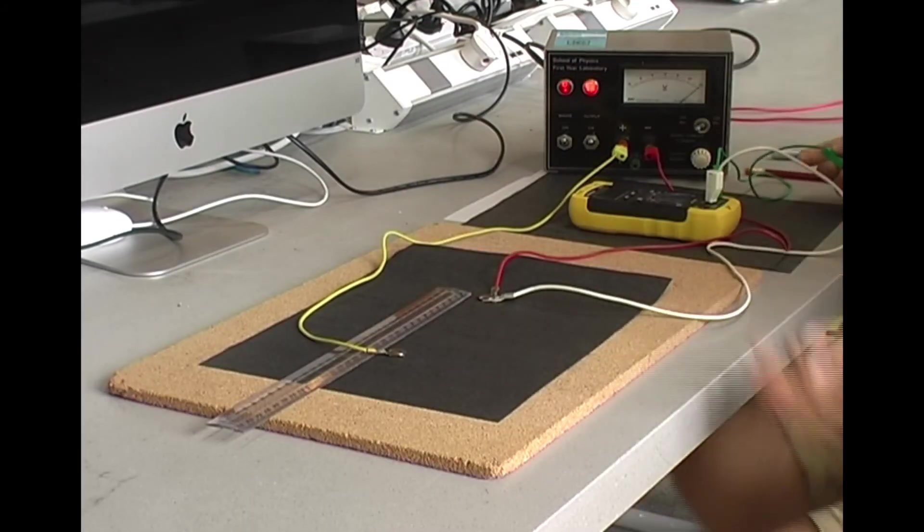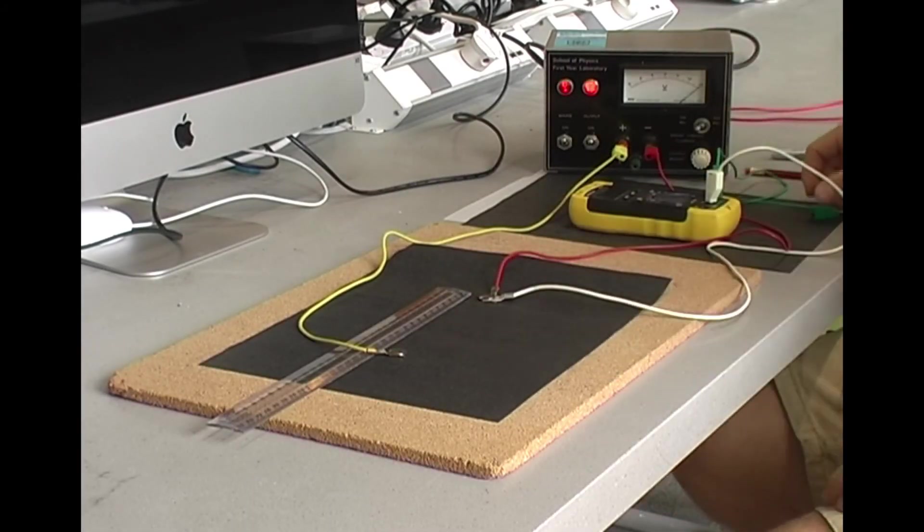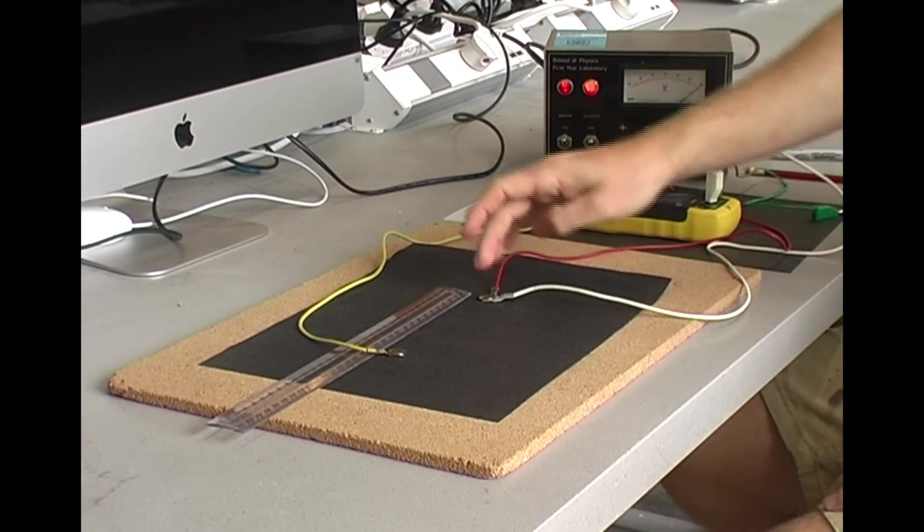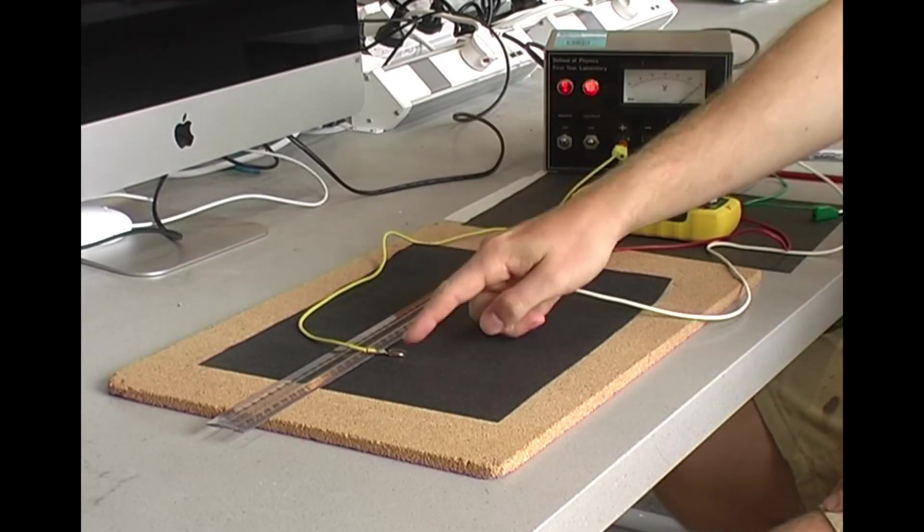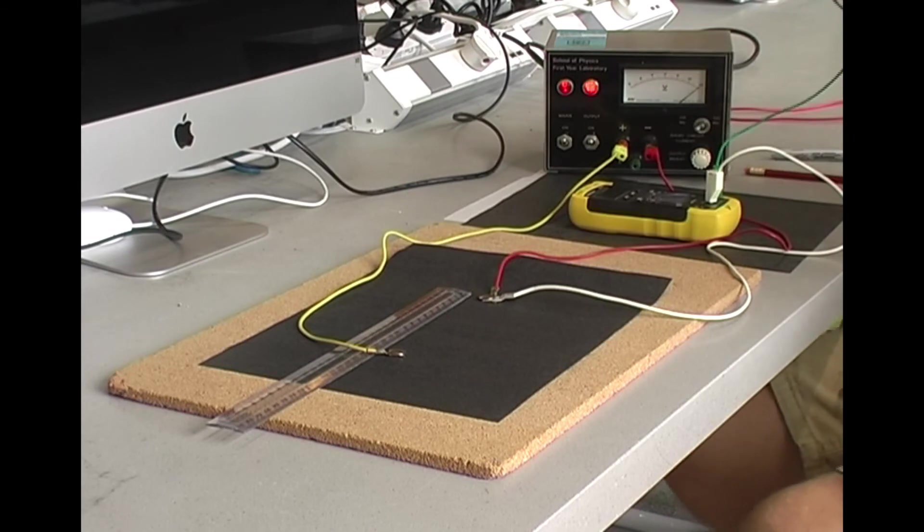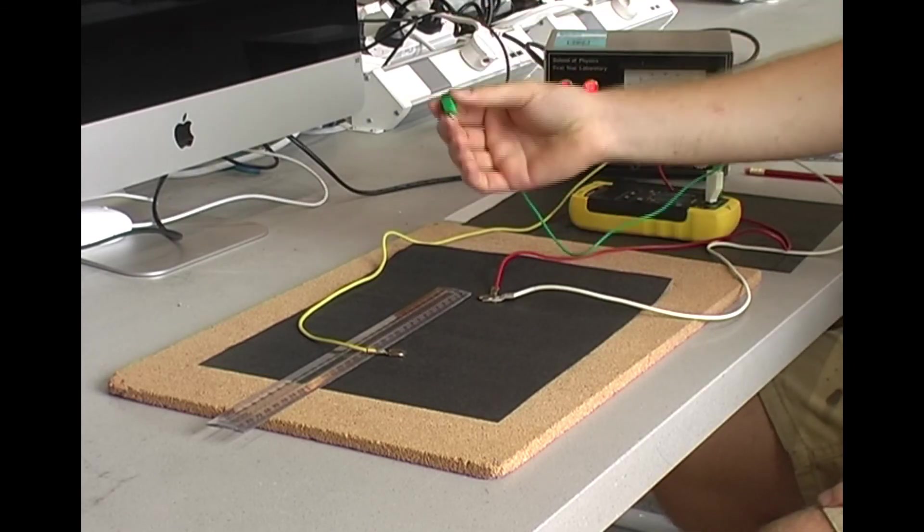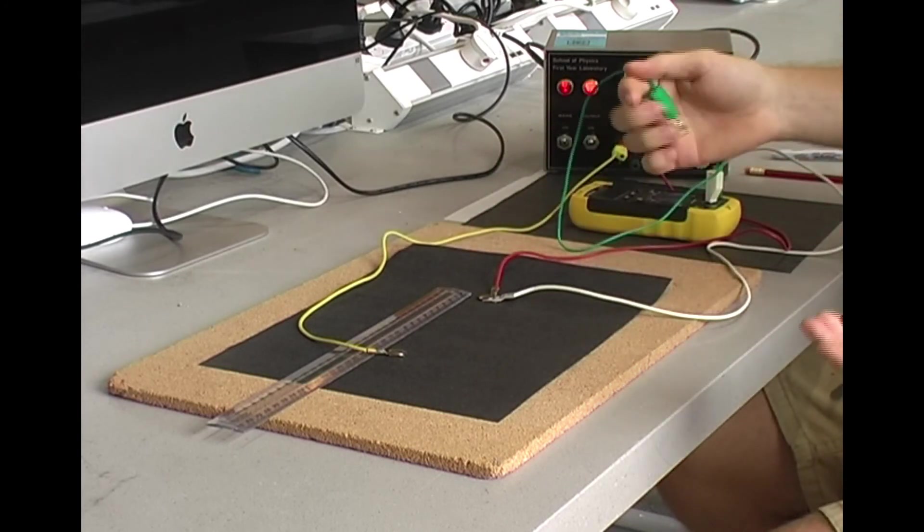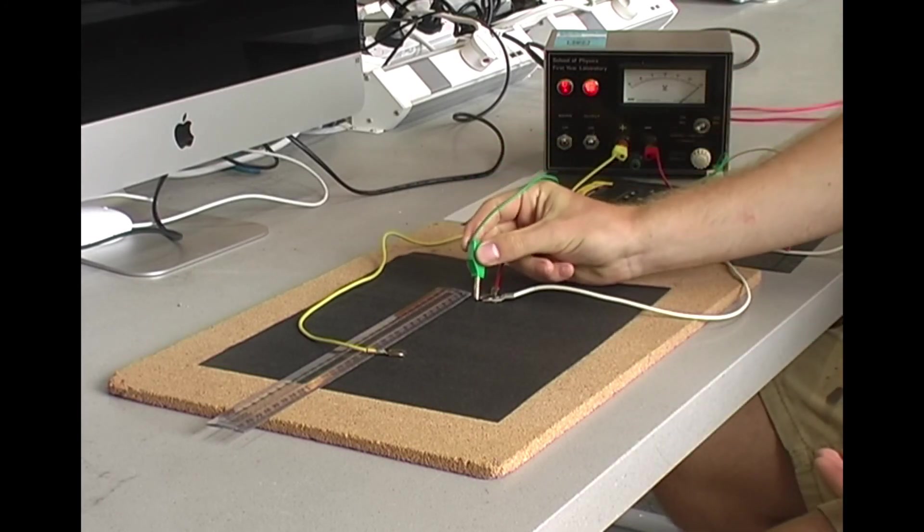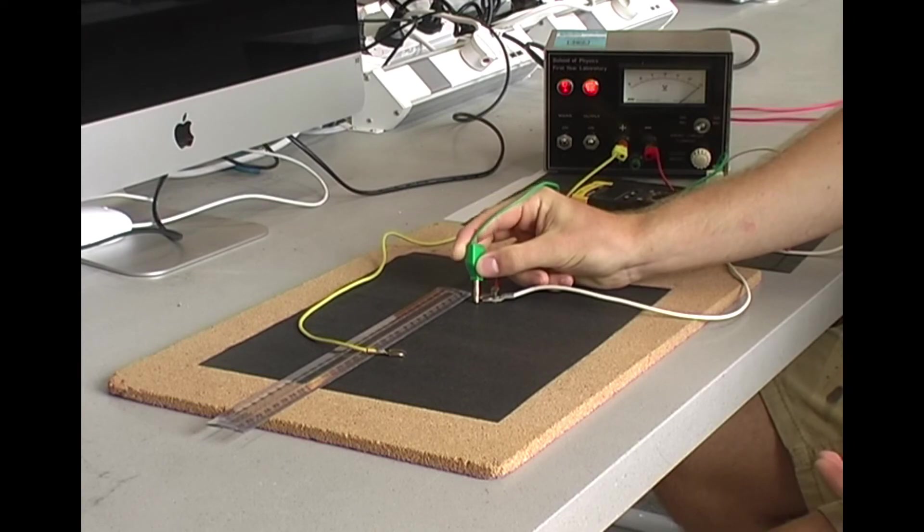Now, for the second part of the experiment, the setup's quite similar. You just need to make sure you've got your negative voltage source to one point and your positive to another point, and you're using your multimeter to probe the voltage again. And you're just looking every 10 centimeters from the edge of your dot, it'll explain in your lab manual, and then finding and recording the voltage at each of those points.